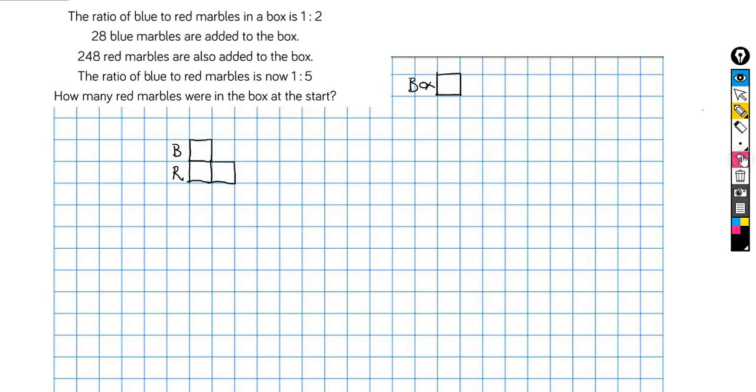So I'm going to think, no, I'm not going to do it that way. I'm going to do my comparison model. So I've got 1 to 2. I then add, I know that we're going to add 28 blue marbles to the box. So I'm going to add an amount here that's going to represent the 28 that I'm adding.